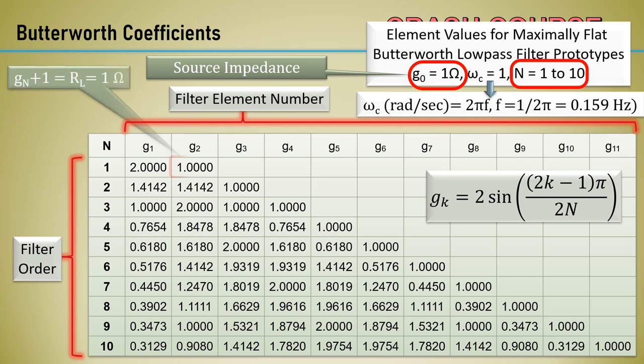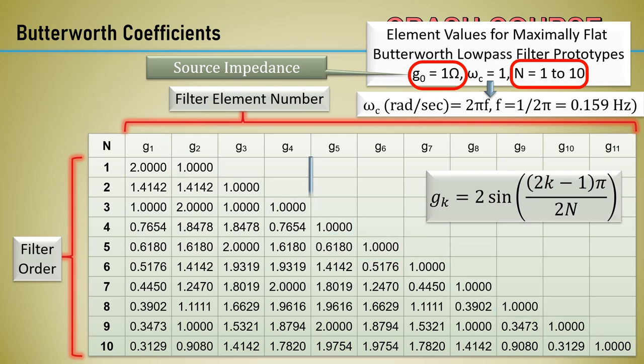Notice the element number, 1 greater than the filter order n, is always 1. This represents the load impedance normalized to 1 ohm. Sometimes it's not included in the table. Note here for a fourth order filter, the filter element's values for inductors and capacitors are G1 through G4. G5 is the load impedance normalized to 1 ohm.